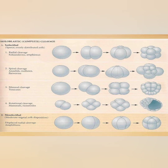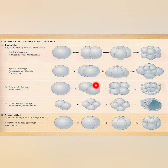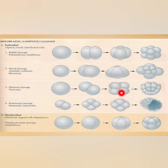In bilateral cleavage, the cleavage furrow cleaves the egg into two equal halves. The mitotic spindle and cleavage planes remain bilaterally arranged with respect to the plane of bilateral symmetry, which coincides with the median plane of the embryo. This type of cleavage is seen in tunicates and some vertebrates.